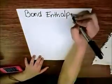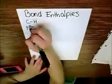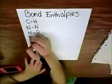So now, we know how many bonds there are. We're going to go and find the bond enthalpies, which is in kilojoules per mole.